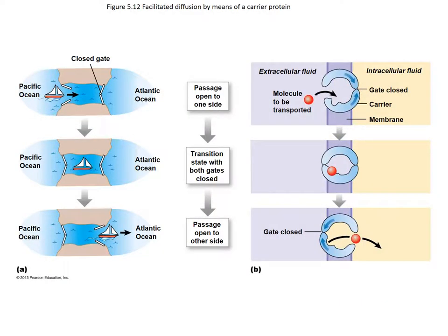Carrier proteins work a little bit differently. They work by opening passage to one side and having a molecule come in to bind — this is called carrier-mediated transport. All types involve a molecule binding to the receptor site to allow the gate to open to the other side. Much like how the Panama Canal works, where a boat enters from the Pacific Ocean into the central area, the gate closes on the Pacific side while the boat waits, and then the Atlantic Ocean gate opens and it passes through.